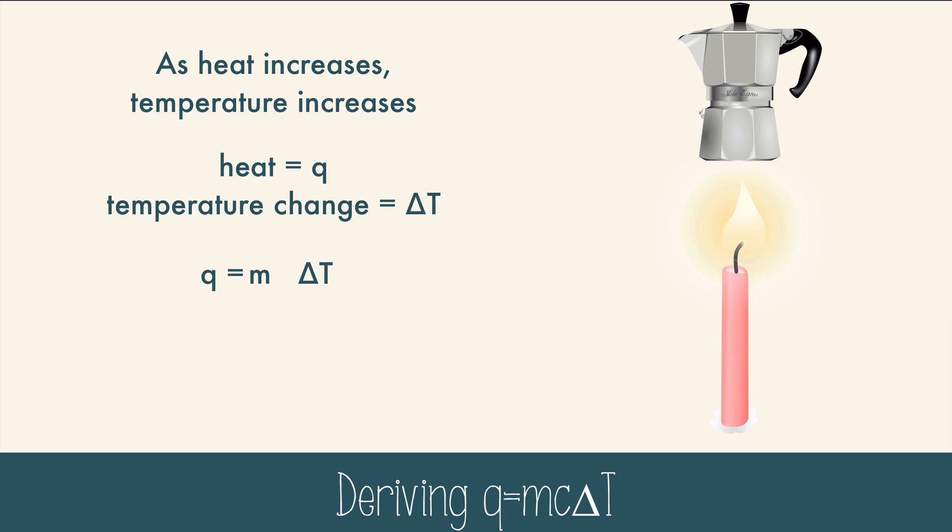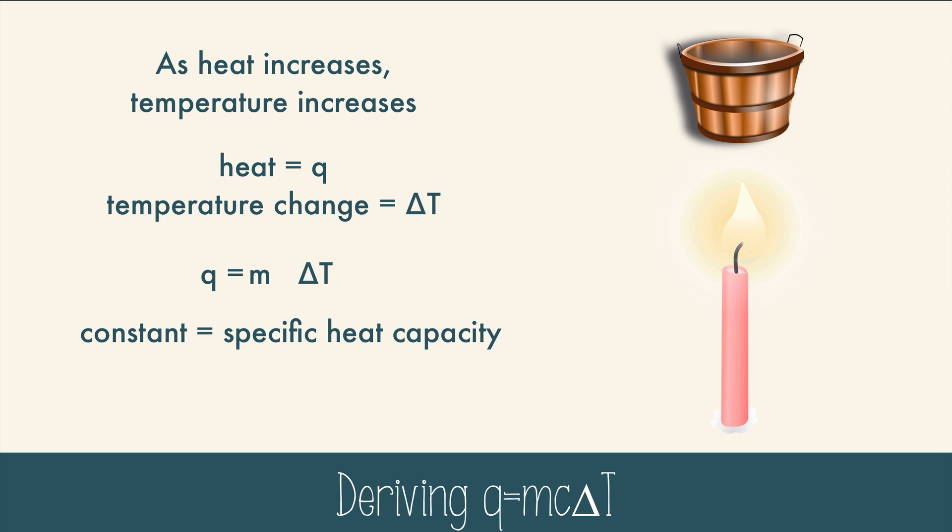All we have left to consider next is the constant. The object we are monitoring will have a different constant depending on what it's made of. If we are heating up a copper tub, or water, or some other chemical, we would have a different constant. So we use the specific heat capacity, or C, to represent the amount of heat the substance requires to raise 1 gram 1 degree Celsius. The specific heat capacity of water is 4.184 joules per gram degree Celsius. And iron is 0.46 joules per gram degree Celsius. This means that water can absorb a lot more heat before the temperature changes. And iron changes temperature easily when the heat changes. So now we have our equation, q equals mc delta t, or sometimes I call it q equals mcat. Which is going to be an incredibly handy equation.